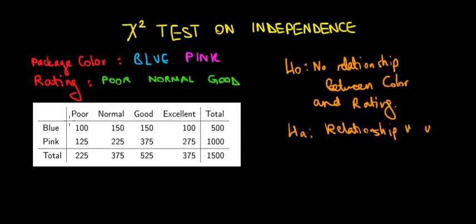If we have no relationship between color and rating — if the color of the package does not affect how consumers rate it — then we would expect to have a certain value equal or at least similar to what we observe in reality. Just like before with chi-square, we will compare expected and observed values, but the question is how we can calculate those expected values.